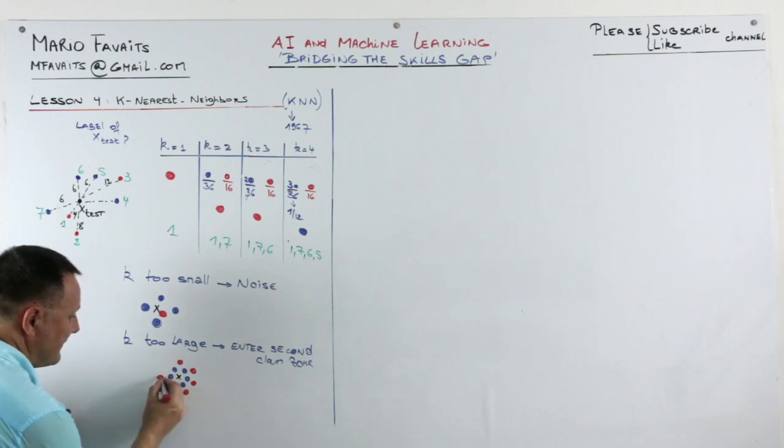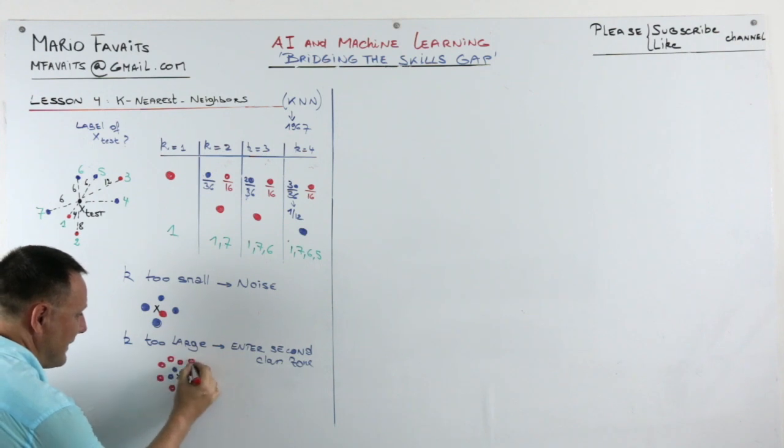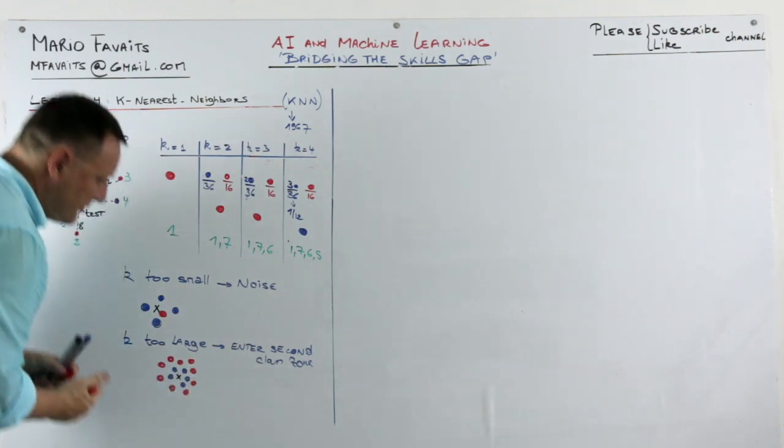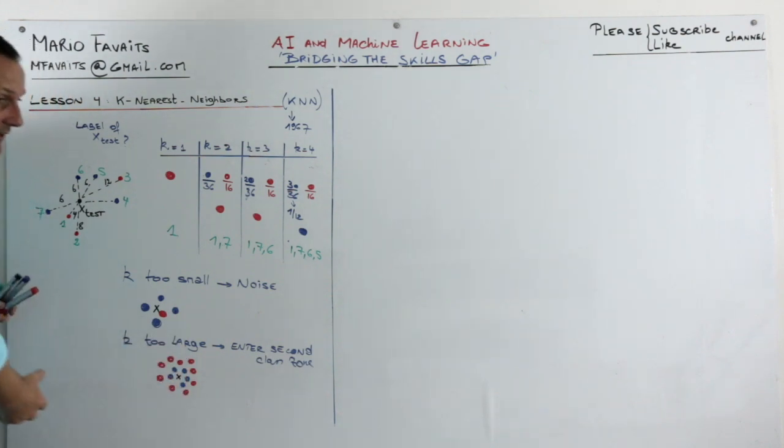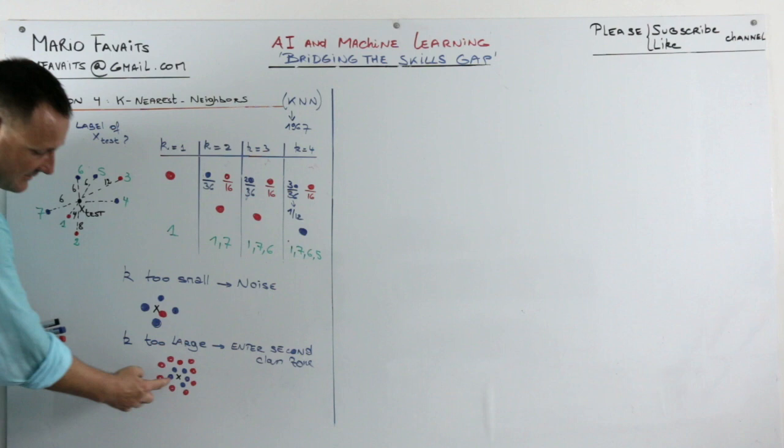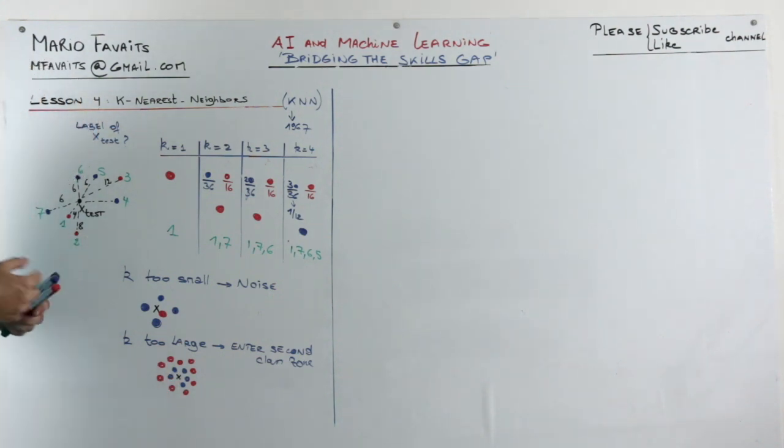You see that at some point you're going to take all the red ones in. Assume that there is a non-linear decision boundary here. And you will actually misclassify it as red if you take k too large.